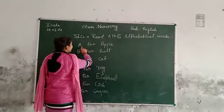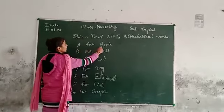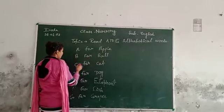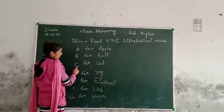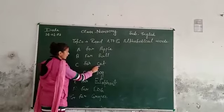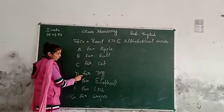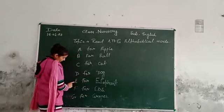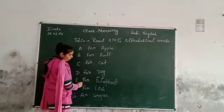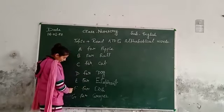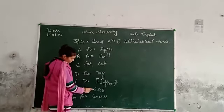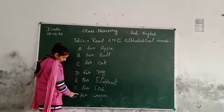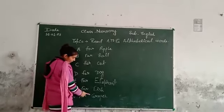A for Apple, B for Ball, C for Cat, D for Dog, E for Elephant, F for Fish, G for Grape.